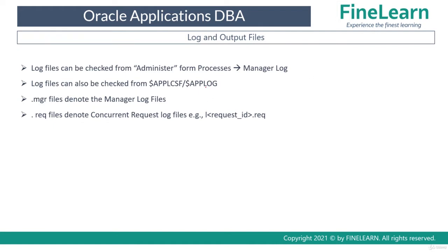The concurrent manager log files can be seen from both the frontend and the backend. From the frontend, use the Administer form, then select a specific manager, click on Processes, then Manager Log. For the backend, check the log files from $APPLCSF/appl/log. In that directory you can see .mgr files which denote the manager log files, and .req files which are the concurrent request log files.